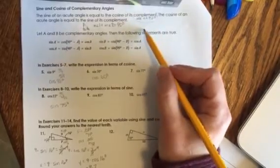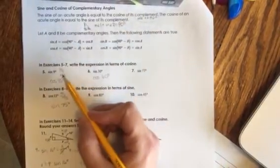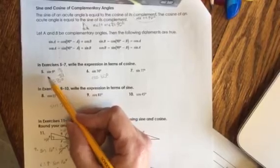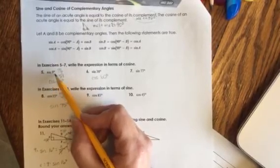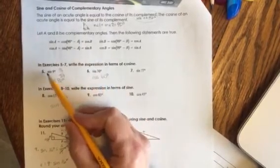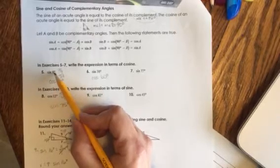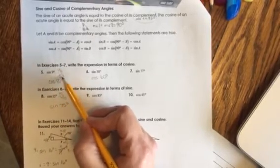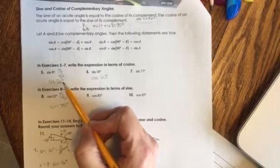You can switch depending on what you need. The first part is going to ask you on some of the practice problems is just to find that, write it in terms of cosine. If I have the sine of 9 degrees, well 90 minus 9 is 81, so that would be the same as cosine of 81 degrees.